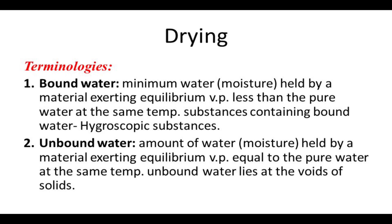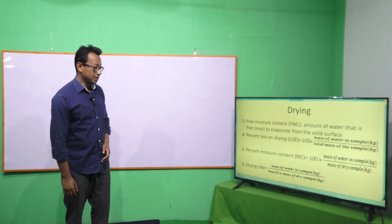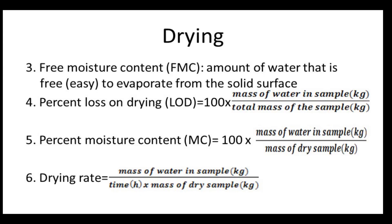Substances having bound water — that means they exert less vapor pressure than pure water at a definite temperature — are known as hygroscopic substances. The third terminology, free moisture content or FMC, is the amount of water that is practically available to evaporate from the drying material. Percent loss on drying is the percent ratio of the mass of water in the sample to the total mass of the sample. Percent moisture content is the percent ratio of the mass of water to the mass of the dry sample. The drying rate is the ratio of mass of water in the sample to the product of time taken in drying and mass of the dry sample.